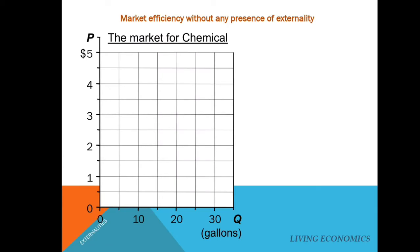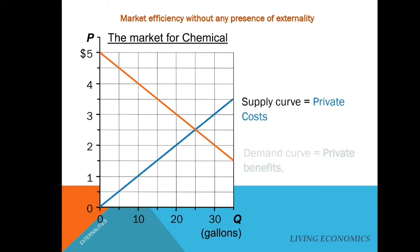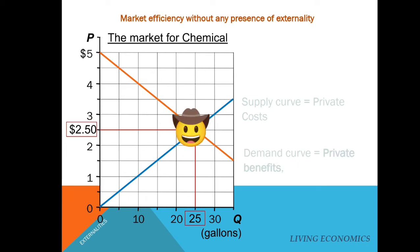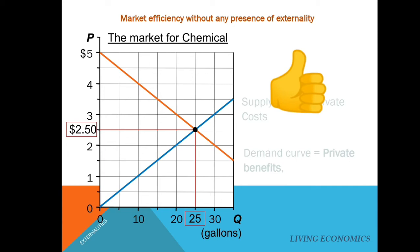Let us depict the efficient market with the help of a graph. For simplicity, we will assume there are no externalities in this market — no external benefits or external costs. You can see there is a demand curve sloping downward, also called the private benefit curve, and a supply curve sloping upward, also called the private cost curve. Demand equals supply at $2.50 and quantity is 25 gallons. This market exhibits equilibrium and efficiency — no shortage, no surplus, no external cost or benefit. The market captures all private costs and benefits, and is a good way of allocating resources efficiently.